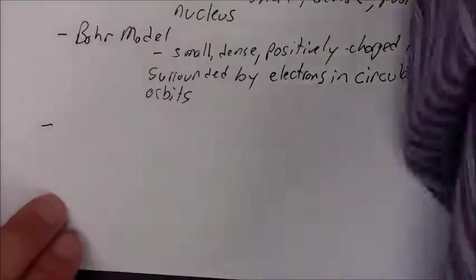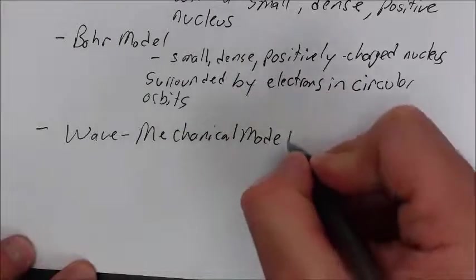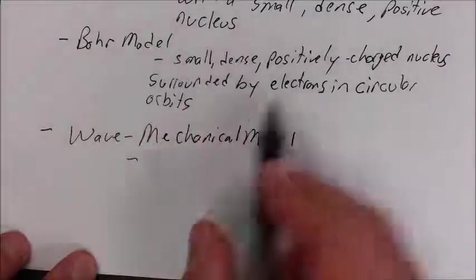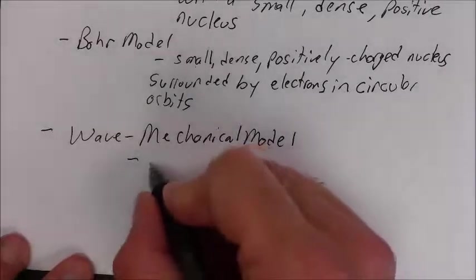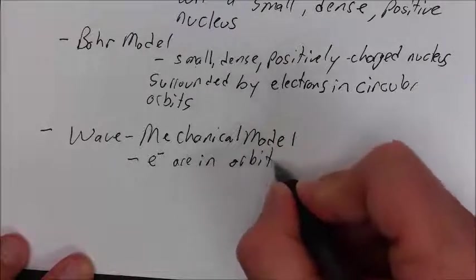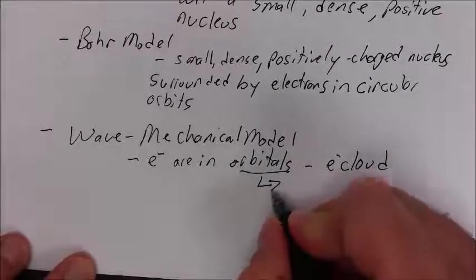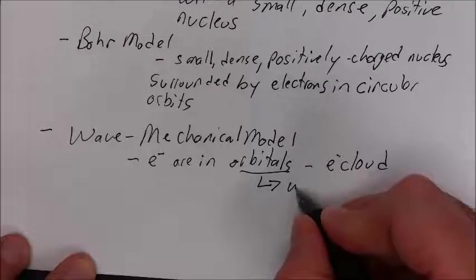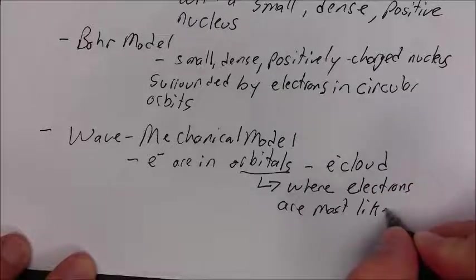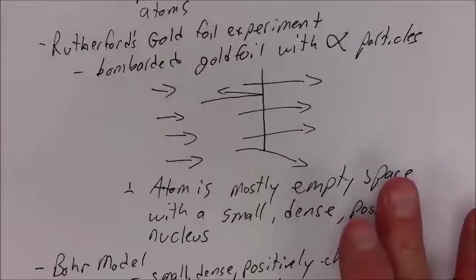Our modern day theory, the wave mechanical model, is very similar to the Bohr model. The only difference is that the electrons are in orbitals, which make up the electron cloud. An orbital is the area where electrons are most likely to be found. So that was the models of the atom.